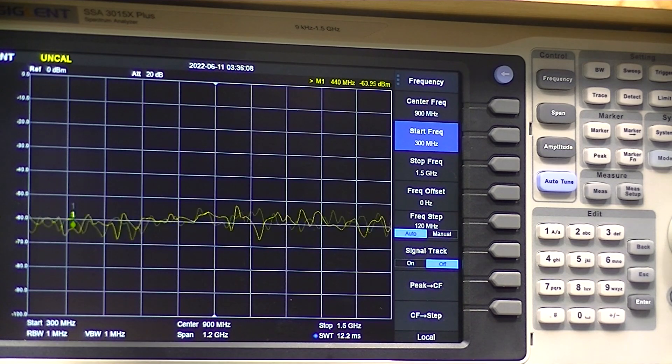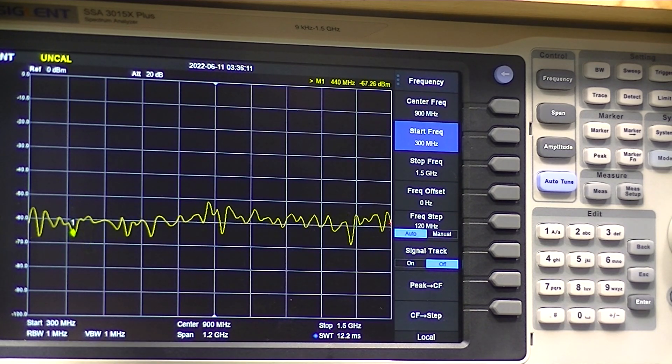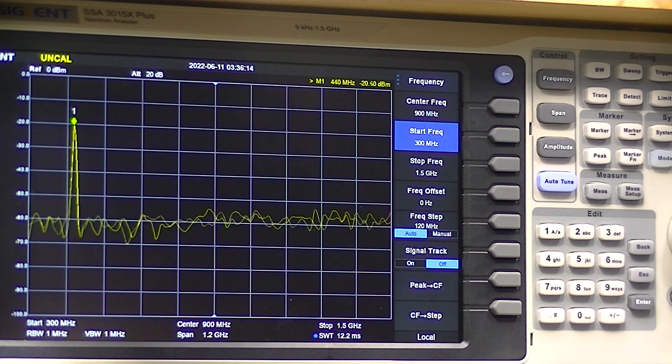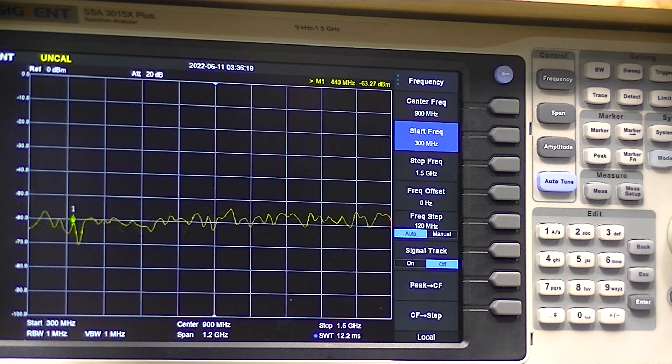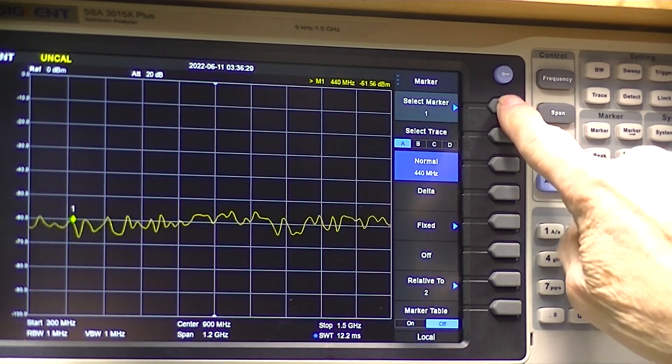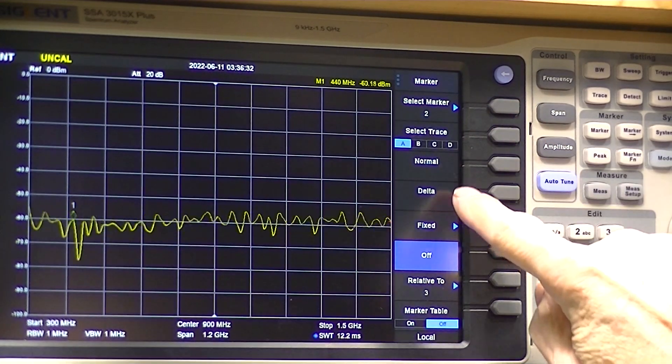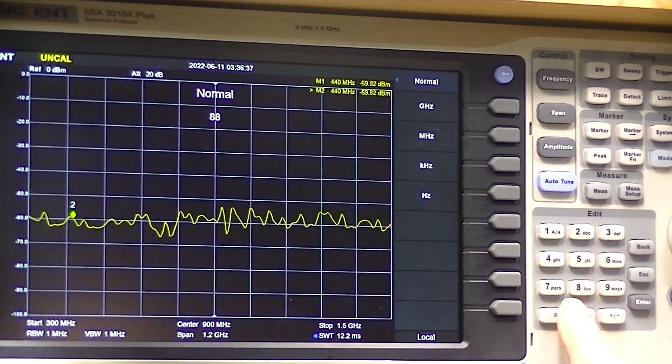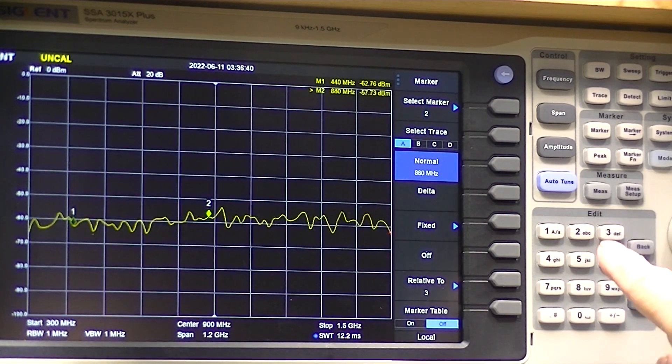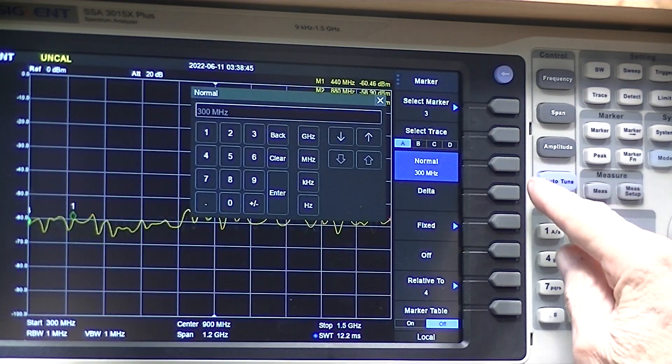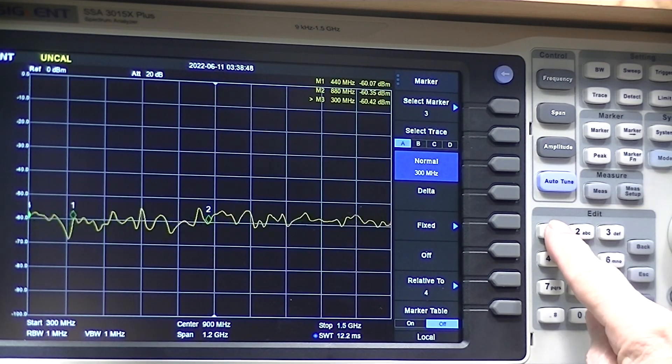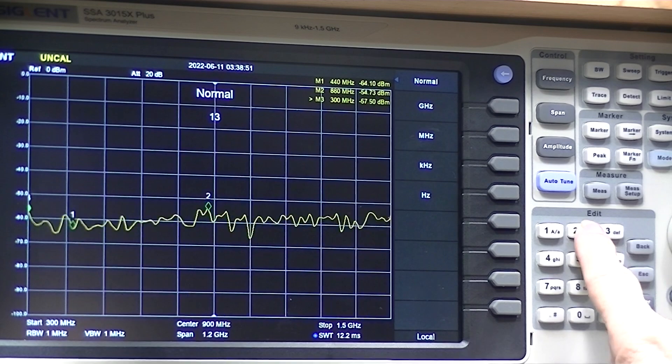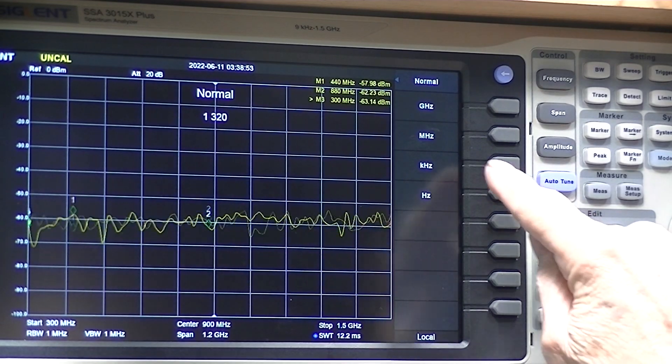And I'm scanning to 1.5 GHz, which means I should see a second or third harmonic if there's anything present. I'll put a marker at the second and third harmonic. So there we go.